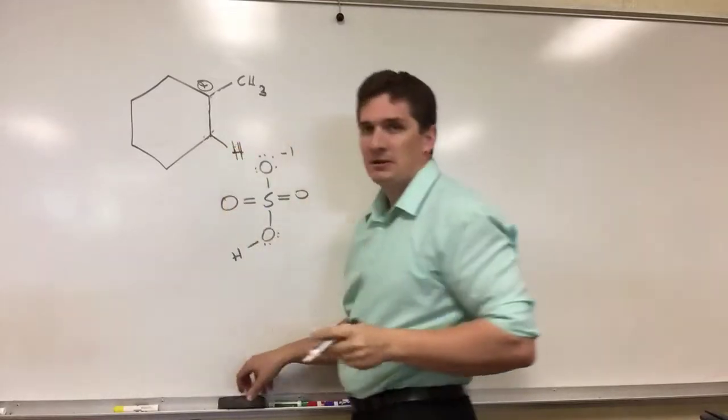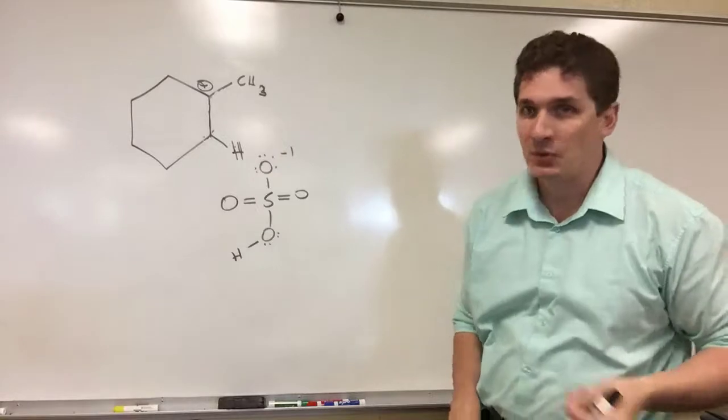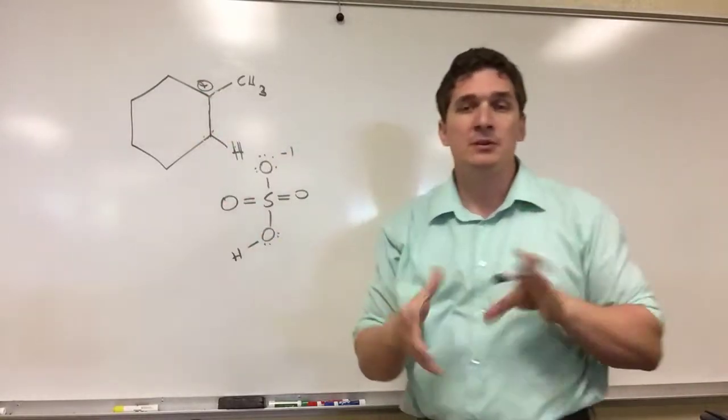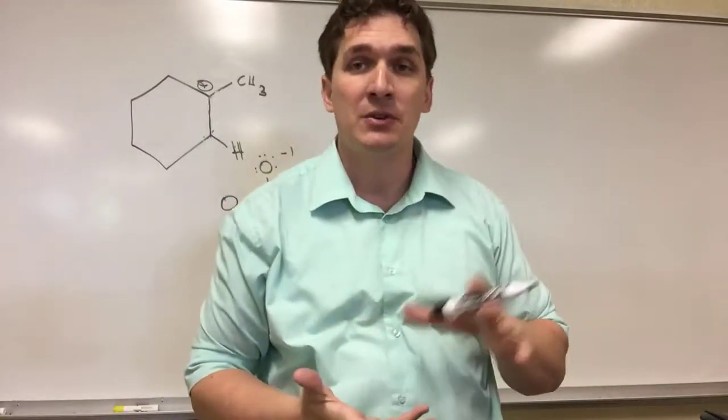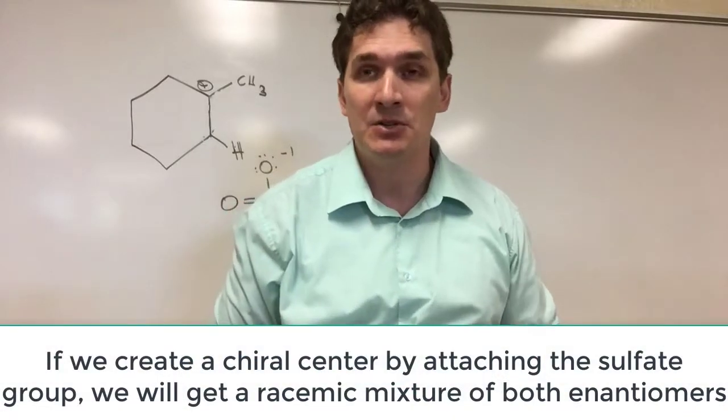Now, much like with HBr, HI, and HCl, we have a carbocation here. It's square planar. We can add to either side. So if this creates a chiral center, we're going to get a racemic mixture of both configurations.